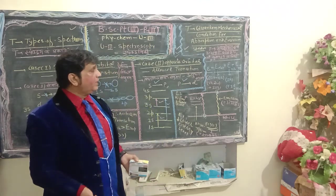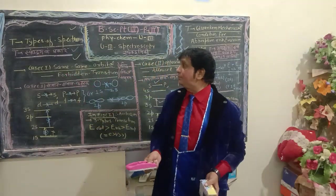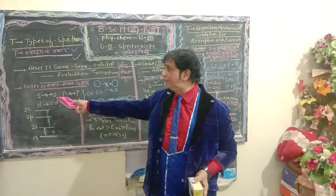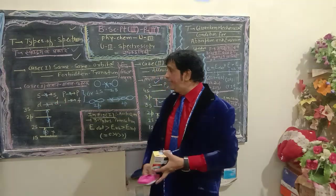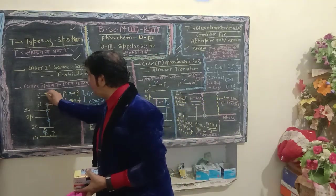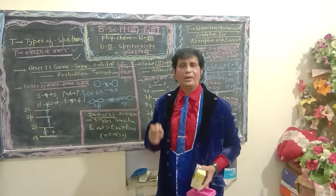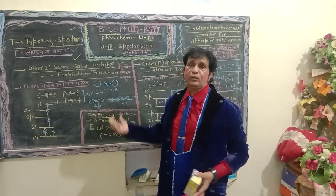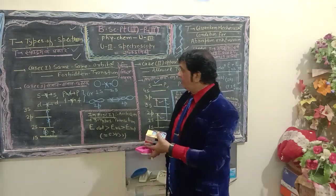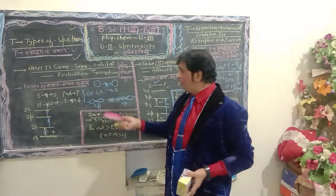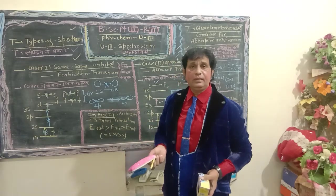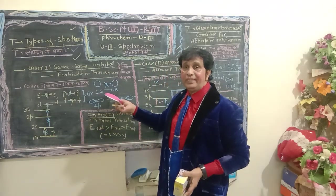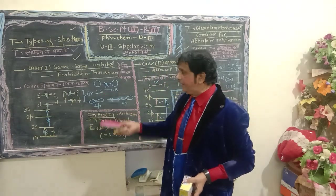The first condition: when electrons transition between the same type of orbitals — such as s to s, p to p, d to d, or f to f — such transitions are not permissible and are known as forbidden transitions. On the blackboard I have shown that 1s to 2s is not allowed, similarly 2p to another p orbital transition is not allowed.